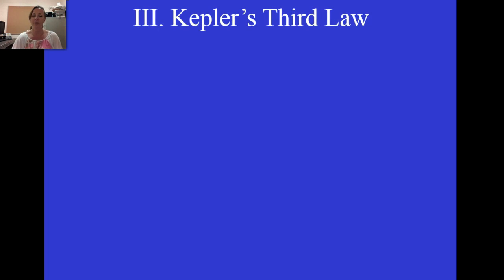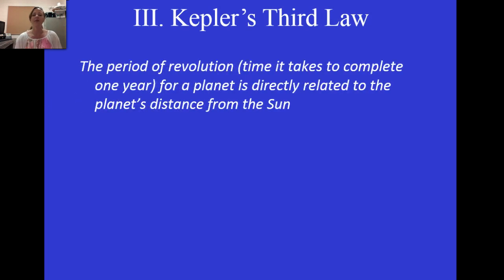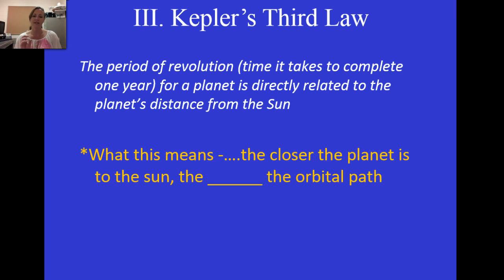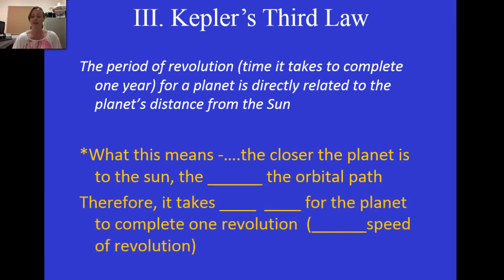Now we're going to look at Kepler's third law. Kepler's third law states that the period of revolution — the time it takes to complete one year for a planet — is directly related to the planet's distance from the sun. The closer the orbital path is to the sun, the shorter and smaller that path is, so it takes less time and a faster speed of revolution to complete one orbit.